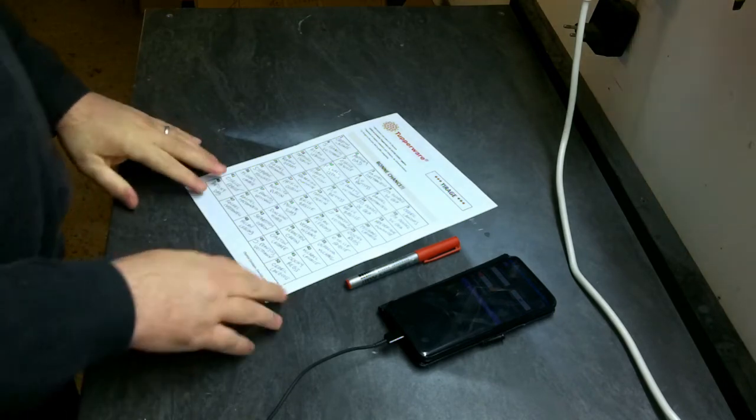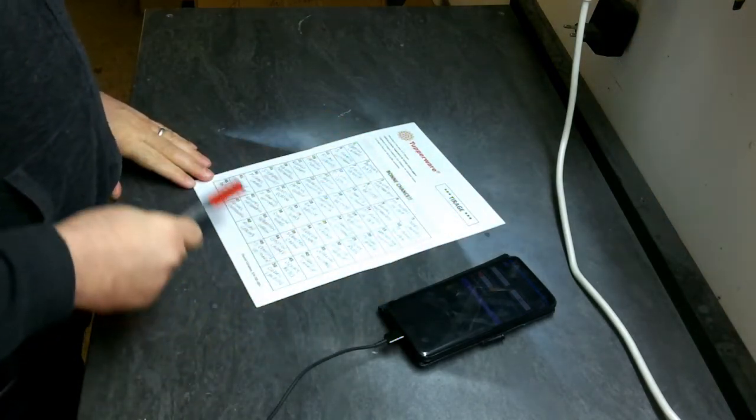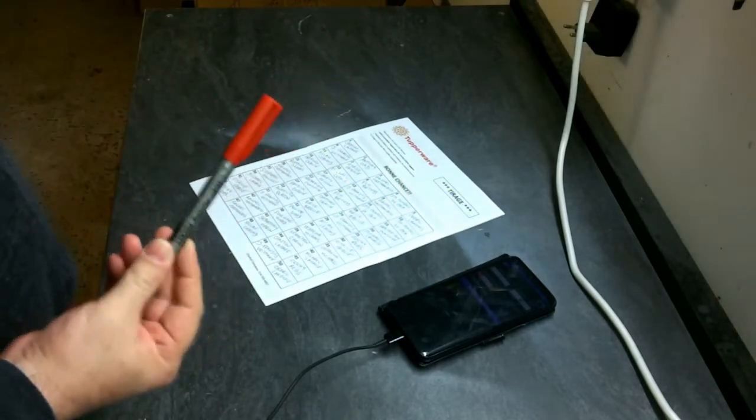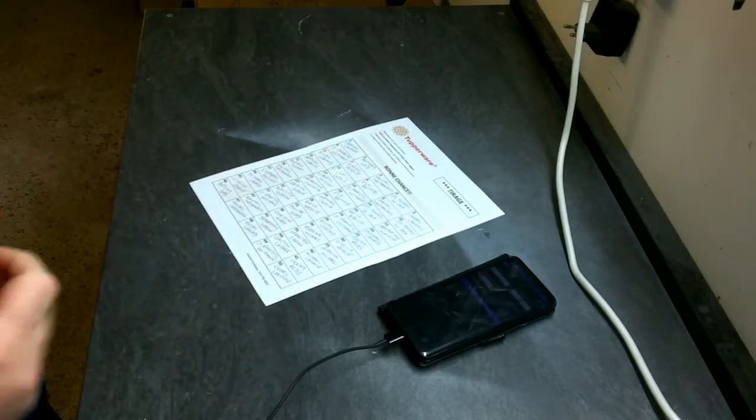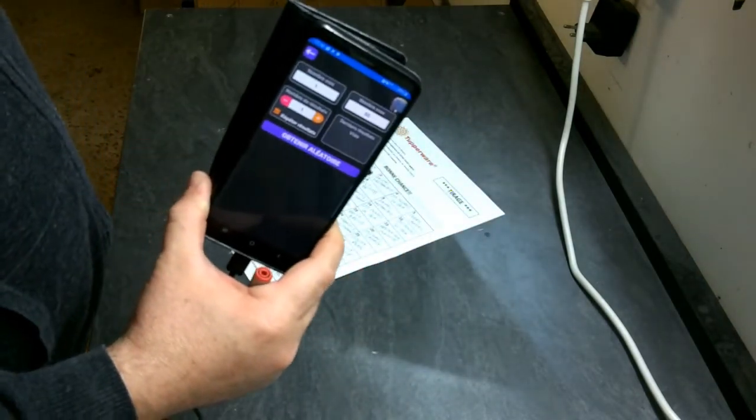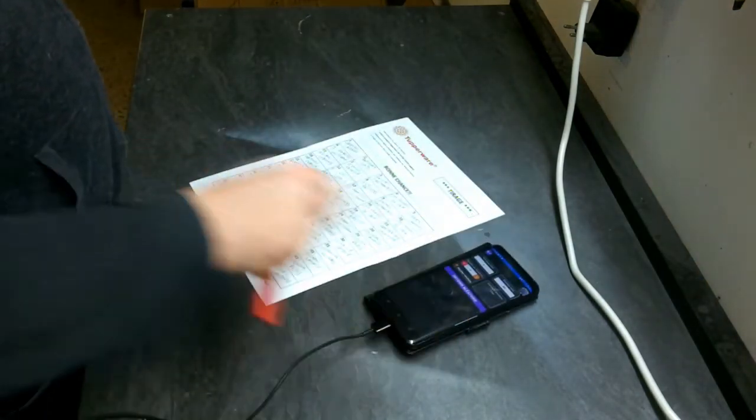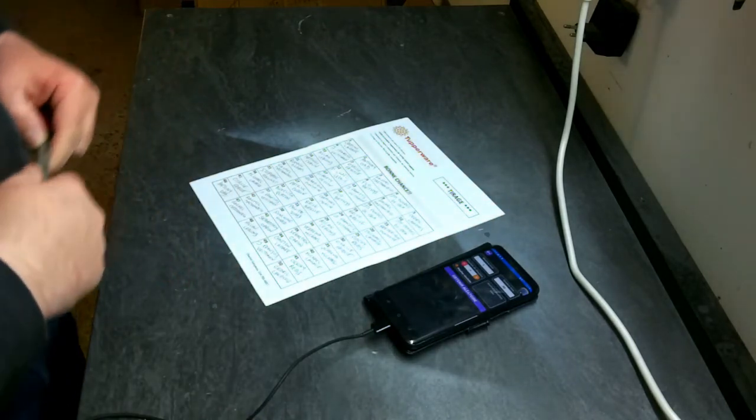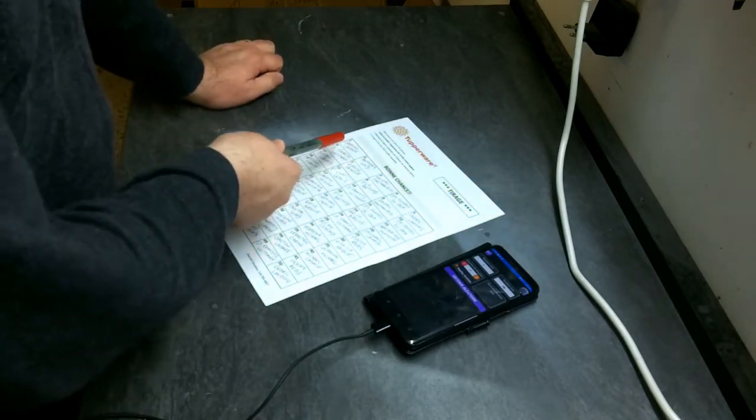Donc je vais citer l'ensemble des gagnants et puis ensuite de ça, comme d'habitude, avec le petit feutre rouge, on entourera ensemble le gagnant. Le tirage au sort aura lieu donc avec l'application tirage aléatoire. Donc c'est parti.